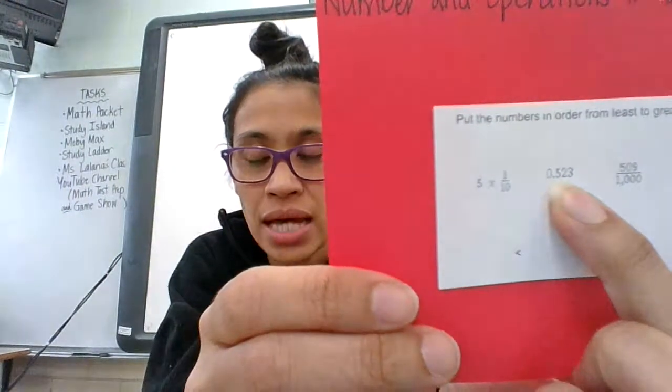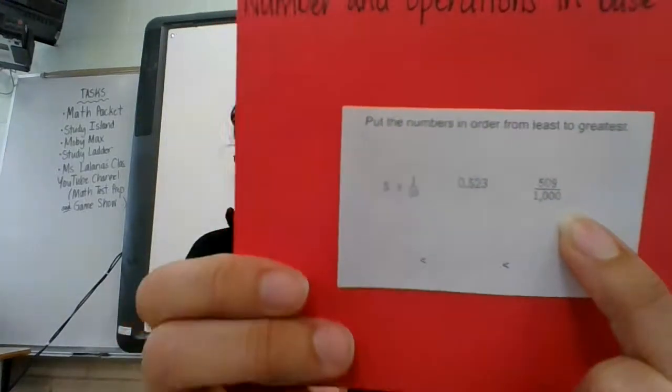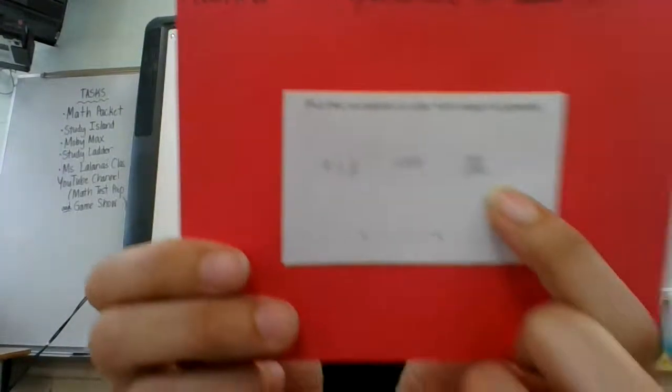What about this one? That's decimal form. And then what about this one? That's a fraction form. So in order to compare those to figure out what's the smallest, I need to make sure that they look the same. So I need to either make them all expanded form, make them all decimals, or make them all fractions, and then compare, okay?